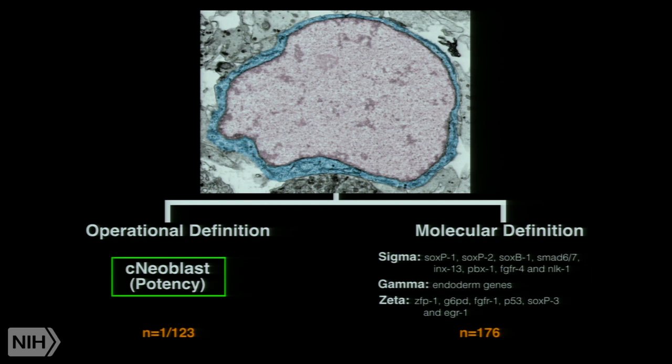Here's the rub — it took 123 injections to get one of these cells to rescue the animal. By injection 120, I would have given up quite frankly. But they just kept on going because the data suggested it was possible to identify this cell population. This provided us with really good evidence that there is a stem cell state that exists in this organism that allows for the potency to be manifested. But this created a paradox — a dichotomy — in that we have an operational definition for these clonogenic neoblasts and a molecular definition, but in both cases the cells are dead. It's entirely retrospective. So what we decided to do was to try to bridge that dichotomy and prospectively identify these cells and begin to study their functions.